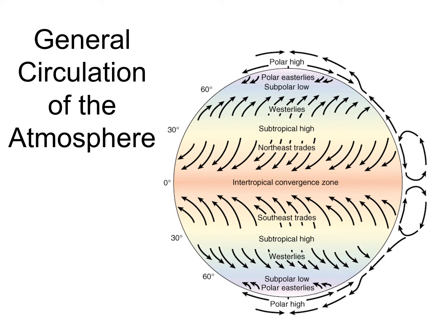We also identified the major winds, and we saw that the names are basically which direction they come from. So we have the Northeast Trade Winds coming from the Northeast, blowing between 30 North and the Equator. We have the Southeast Trades blowing between 30 South and the Equator, converging at the ITCZ. We have the prevailing Westerlies blowing between 30 and 60 degrees North and also 30 and 60 degrees South, generally coming from the West. And then we have the Polar Easterlies blowing between 90 North and 60 North, and also 90 South and 60 South, generally coming from the East.